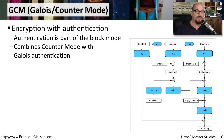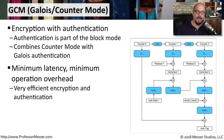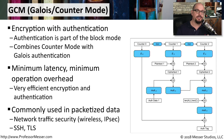If you need to combine authentication with block mode encryption, you can use GCM, or Galois/Counter Mode. This combines the counter mode we just saw with additional functions created by mathematician Everest Galois. One of the advantages of GCM is that it provides both encryption and authentication simultaneously, with a minimum amount of latency and operational overhead. Because of this efficiency, GCM is commonly used for network communication — you'll see it on wireless networks, IPsec encrypted tunnels, and for encryption to web servers using SSH or TLS.